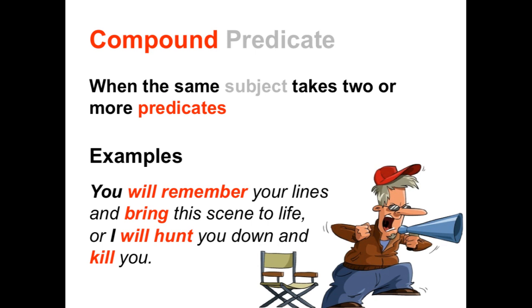Let's look at each group to find the subjects. Who will remember? Who will bring? The answer is the pronoun 'you.' 'You' is the subject in the first clause. The subject 'you' has a compound predicate — two predicates: 'will remember' and 'bring.' But what about 'will hunt' and 'kill'? Who will hunt and kill? The answer is the pronoun 'I.' 'I' is the subject in the second clause, and it also has a compound predicate. So this sentence has two clauses and two compound predicates.